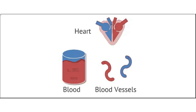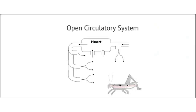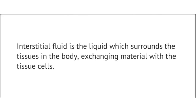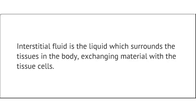There are two ways in which these components are organized. Circulatory systems can be open or closed. An open circulatory system has open-ended blood vessels, meaning that the fluid which is pumped into the blood vessels ends up emptying into the common body cavity. There is no difference between the blood and the interstitial fluid for these organisms. Interstitial fluid is the liquid which surrounds the tissues in the body, exchanging materials with the tissue cells.